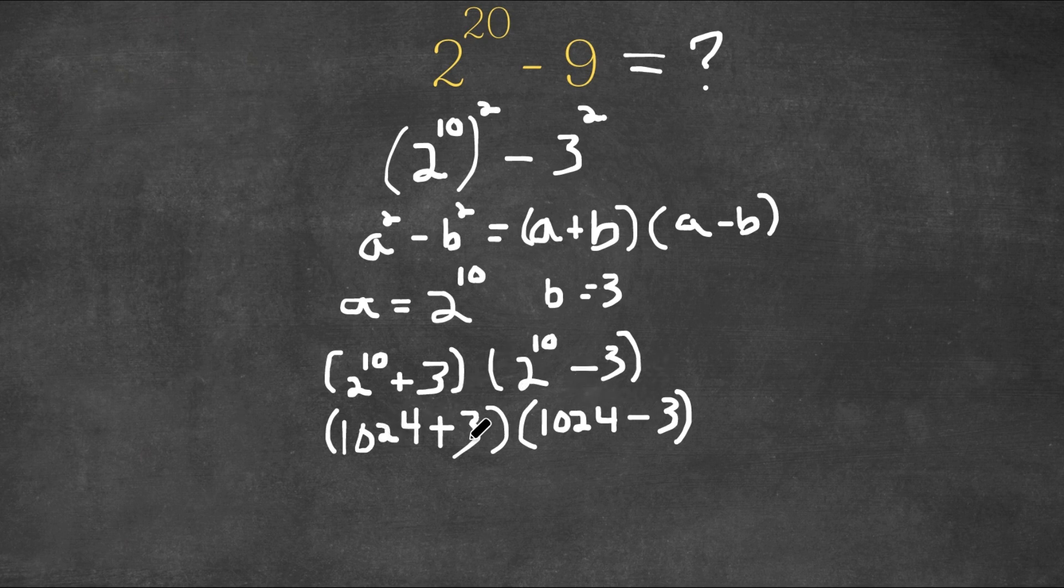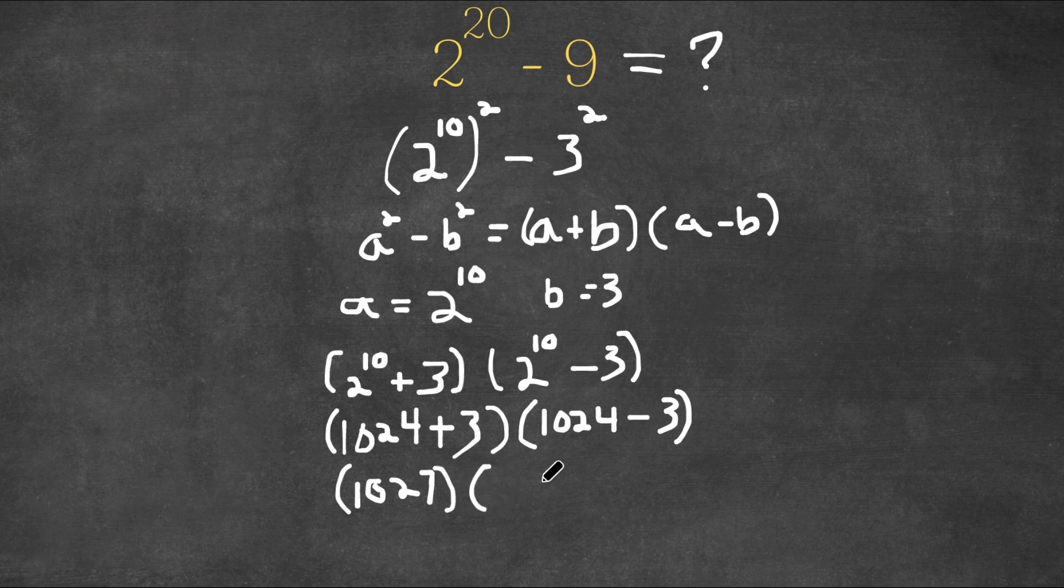Now 1,024 plus 3 is 1,027, and 1,024 minus 3 is 1,021.